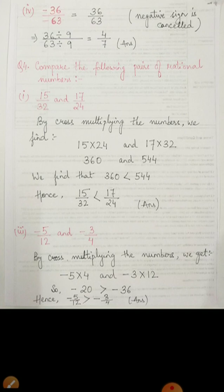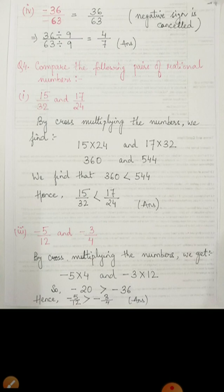Question number 4: compare the following pairs of rational numbers, that is, 15 by 32 and 17 by 24. Recall the third property from the previous class — when there are two rational numbers, we can cross multiply them. So here we'll do the same: cross multiply and then compare. On one hand, we get 15 into 24, that is 360. On the other hand, 17 multiplied by 32 is 544. We can clearly see that 360 is less than 544. Hence, 15 by 32 is less than 17 by 24.